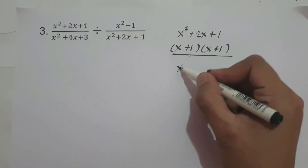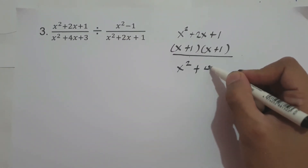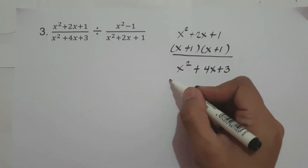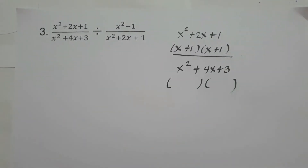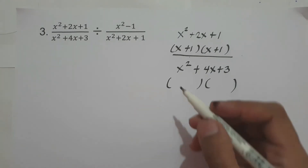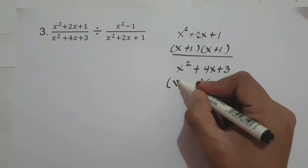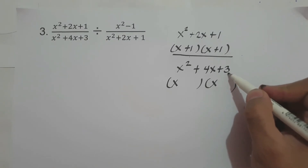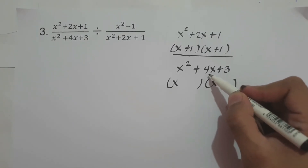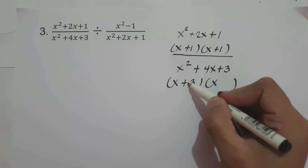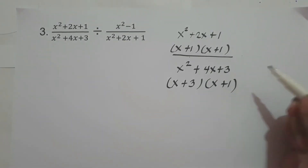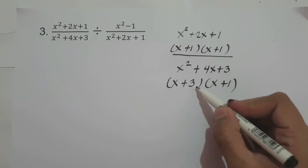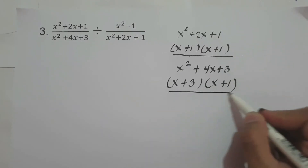What about x² plus 4x plus 3? The factors of x² are x and x. What two numbers, when multiplied, give 3, and when added, give 4? That is positive 3 and positive 1. 3 plus 1 is 4, and 3 times 1 is 3. So the factors of x² plus 4x plus 3 are (x+3)(x+1).